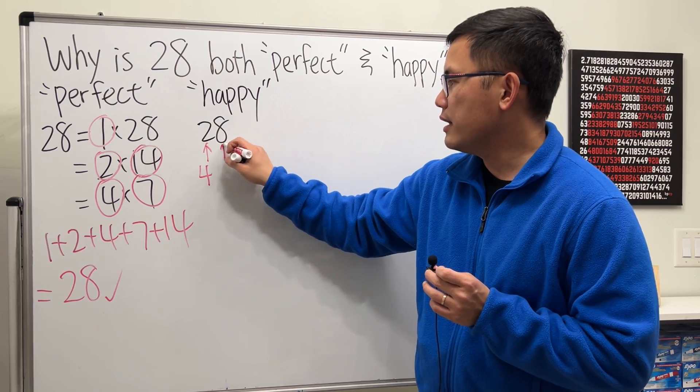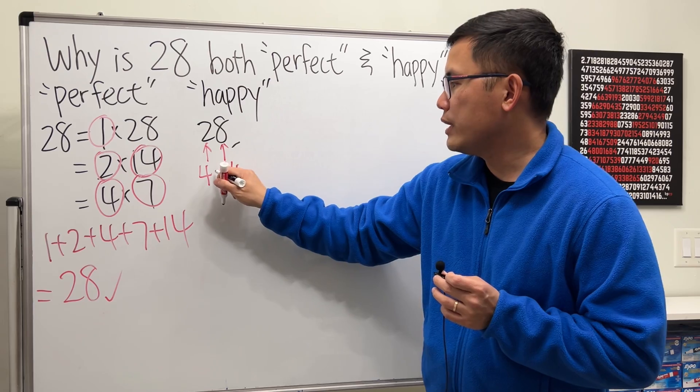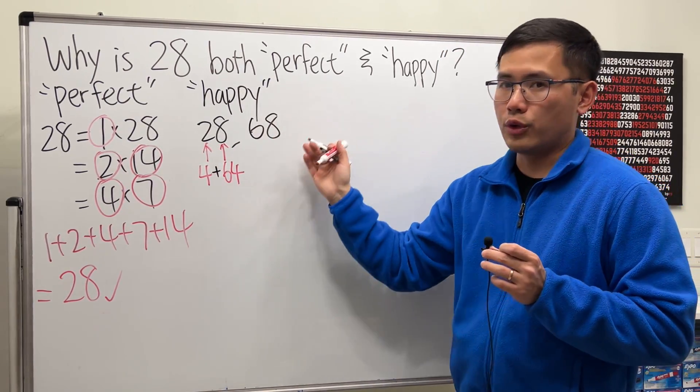And I'm going to look at the next digit, which is 8, and I will square that, and we get 64. And then we are going to add them up. So that will give us 68. That's how we get to the next number.